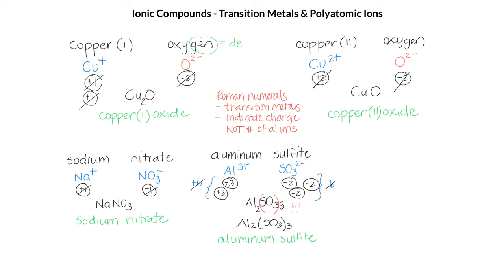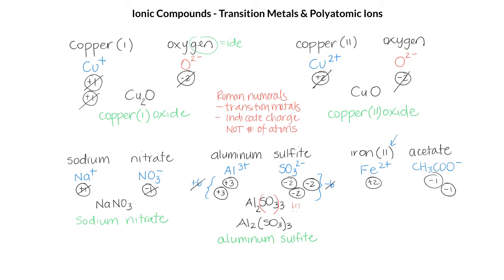Let's try one more that combines transition metals and polyatomic ions. Let's write the formula for iron 2 acetate. The iron 2 cation is Fe²⁺ — remember that the Roman numeral tells us about the charge — and the acetate ion is CH₃COO⁻. We have a plus 2 and a minus 1, so our charges won't cancel out with only one of each ion, and so we need a second acetate ion so that 2 plus and minus 2 cancel out.